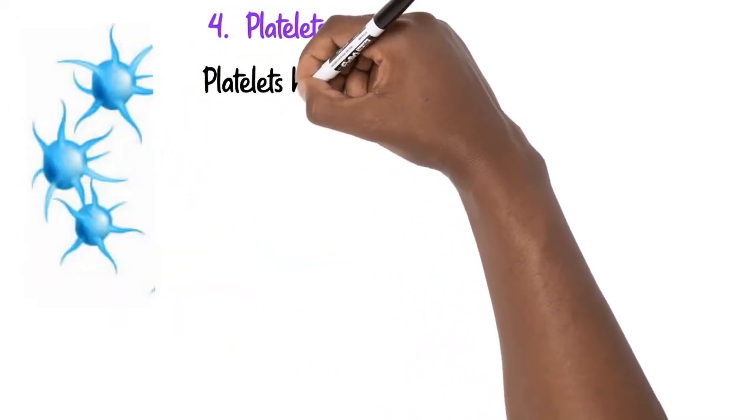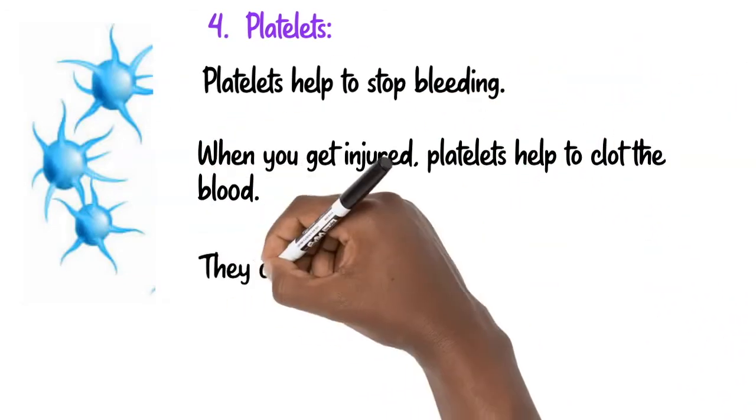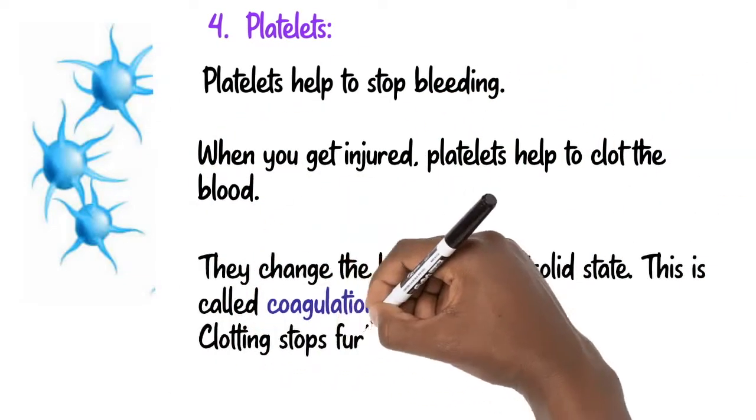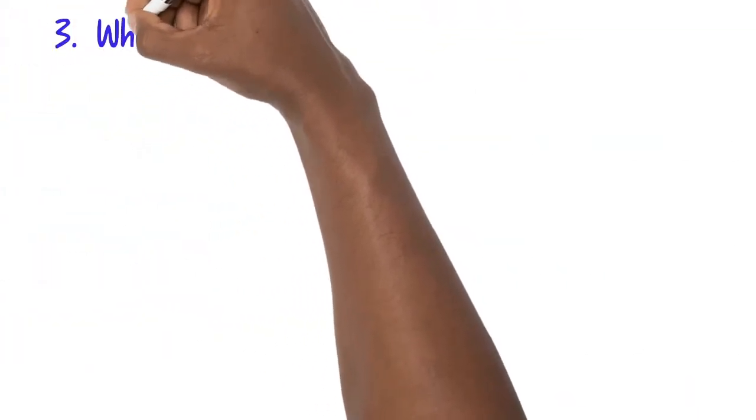Platelets help to stop bleeding. When you get injured, platelets help to clot the blood. They change the blood to a semi-solid state. This is called coagulation. Clotting stops further loss of blood from the injury.